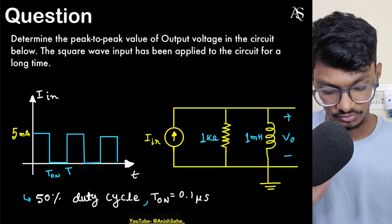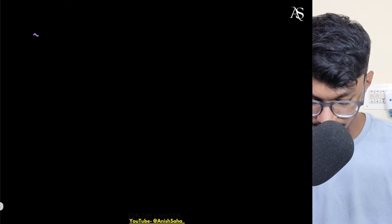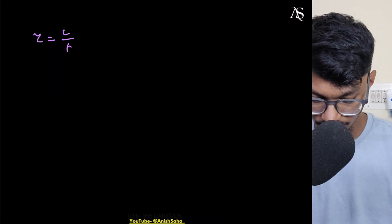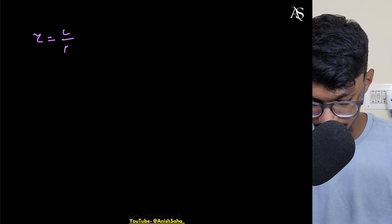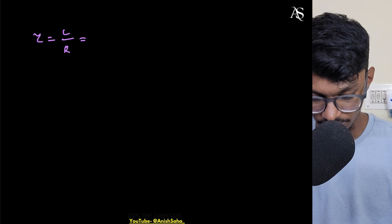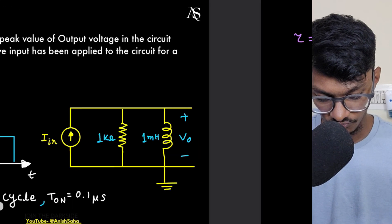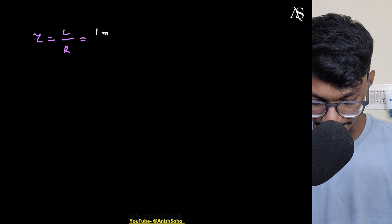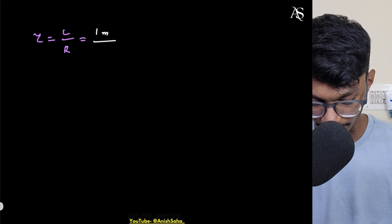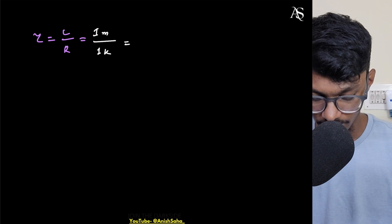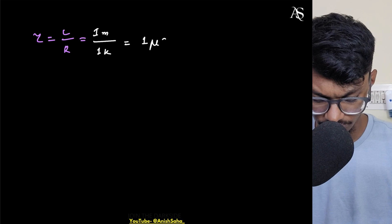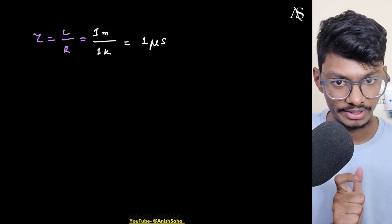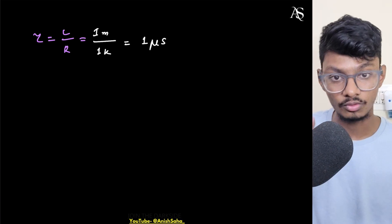First, what is tau in this case? Tau equals L divided by R. R is 1 kilo-ohm, so tau will be 1 microsecond.